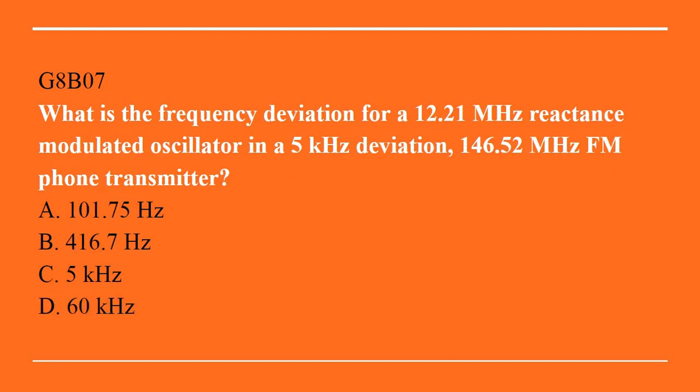G8B07: What is the frequency deviation for a 12.21 MHz reactance modulated oscillator in a 5 kHz deviation, 146.520 MHz FM phone transmitter? A. 101.75 Hz. B. 416.7 Hz. C. 5 kHz. D. 60 kHz. Correct answer is B. 416.7 Hz.